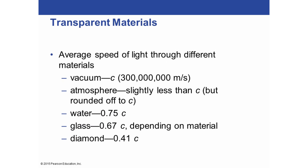It's interesting to look at the speed of light through different materials. The speed of light through a vacuum is called C, which is 300 million meters per second. The speed in the atmosphere is slightly less but we round it to C. The speed of light in water is 0.75 C, in glass it's about 0.67 C, and through a diamond it's 0.41 C — a little less than half the speed in a vacuum.